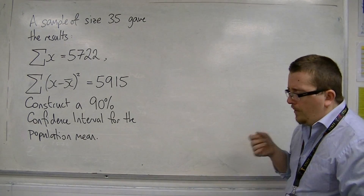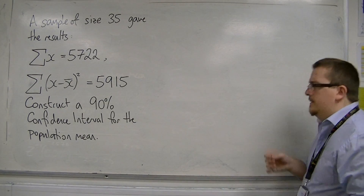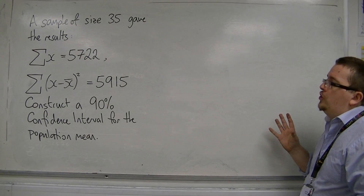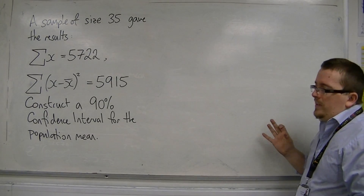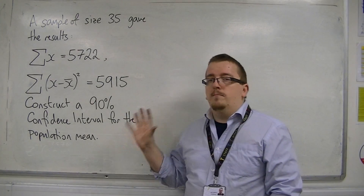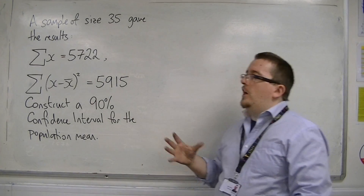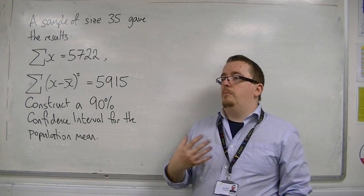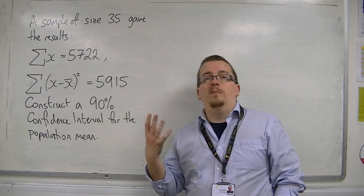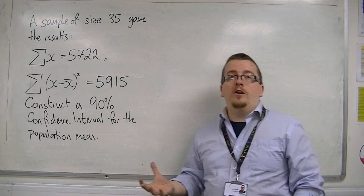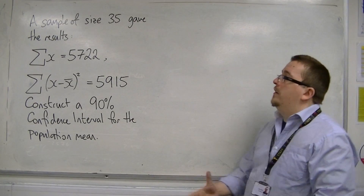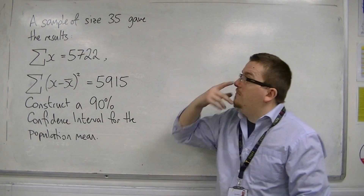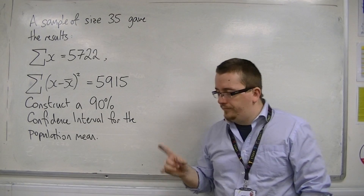A couple of things to note here. We don't know anything about the population. We don't know the population mean, we don't know the population variance, and we don't know if the population is normally distributed or not. All we've got to go on is a sample of 35 results.